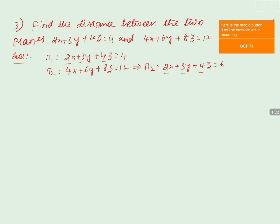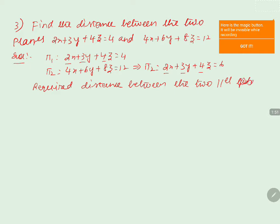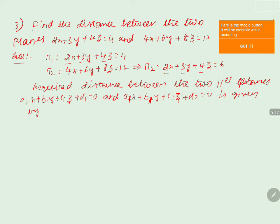We will find the distance between the two parallel planes using the formula. The required distance between two parallel planes of the form a1x plus b1y plus c1z plus d1 equals 0 and a1x plus b1y plus c1z plus d2 equals 0 is given by the modulus of d1 minus d2 divided by the square root of a squared plus b squared plus c squared.